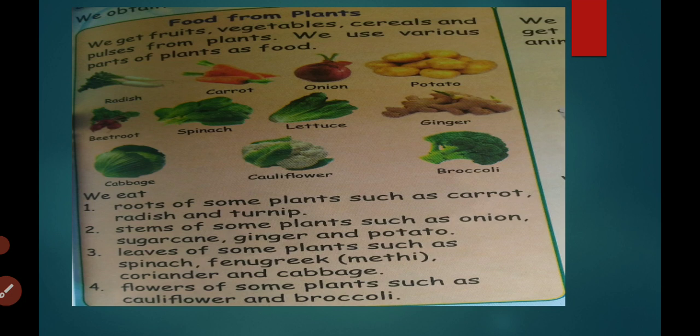We get fruits, vegetables, cereals, and pulses from plants. We eat various parts of plants as food. We eat roots of plants. Roots of some plants such as carrot, radish, and turnip.